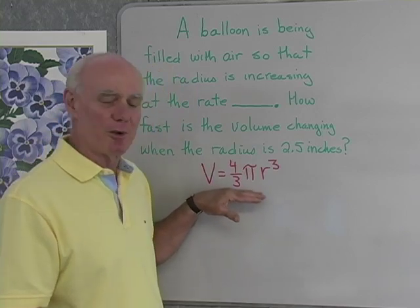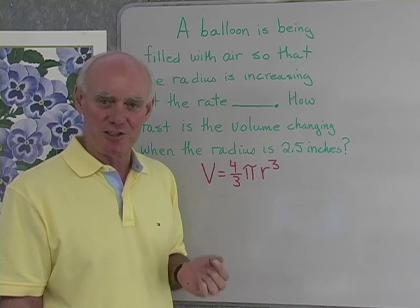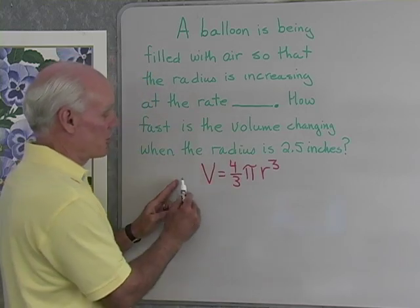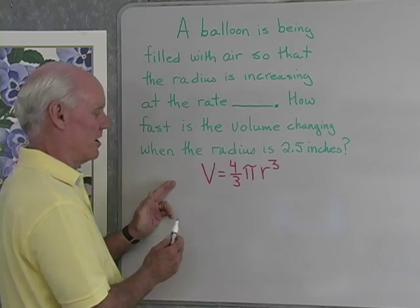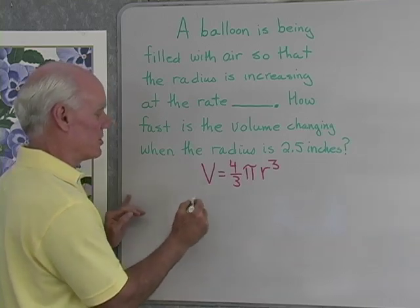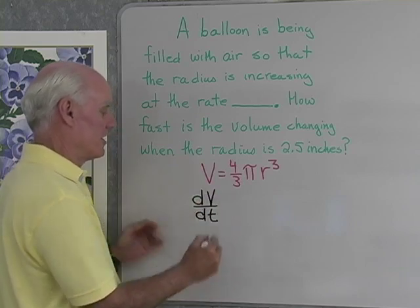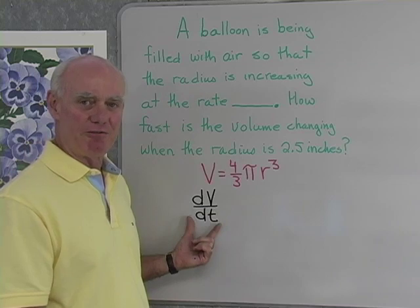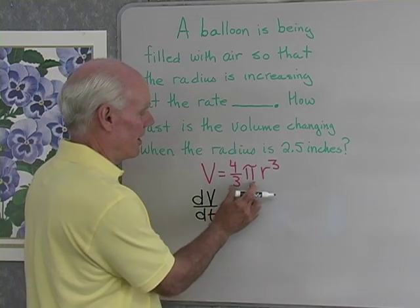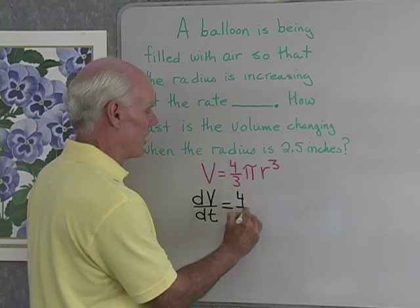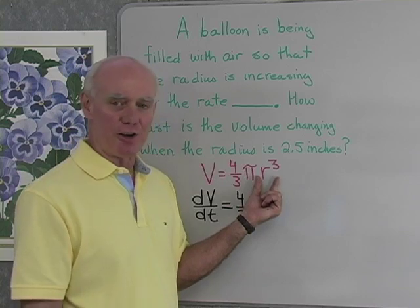In order to find that relationship, what we do is we take this formula right here and we differentiate implicitly with respect to t for time. So let's do that. I'm just going to differentiate left to right, and I'm going to differentiate with respect to t. So the derivative of V with respect to t is just simply dV/dt. That stands for the rate of change of volume with respect to time. I'll differentiate again. Here I have a couple of constants, so I'll just write those down, 4 thirds pi.